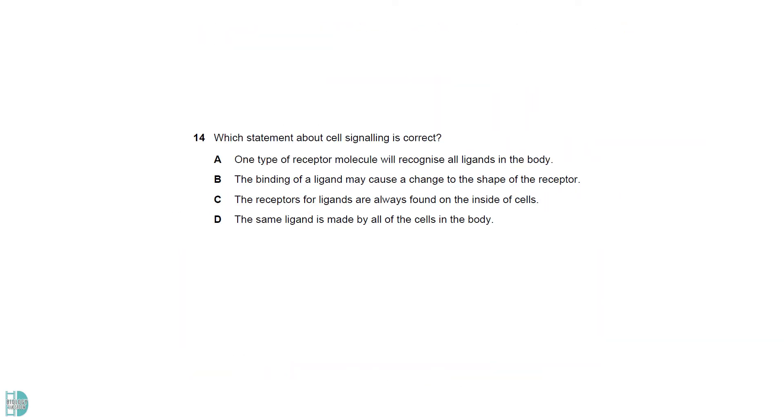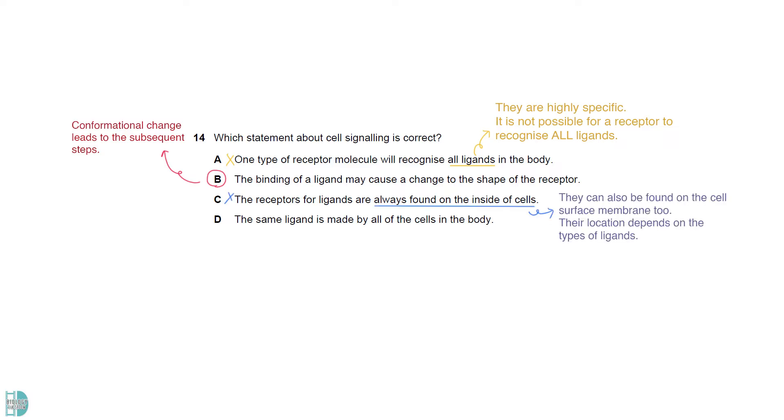A is incorrect. A receptor molecule is highly specific to its ligand. It cannot recognize all ligands in the body. B is the answer. The binding may cause a conformational change to the receptor, which leads to the subsequent steps. C is wrong because receptors can be found on the cell surface membrane too. Their location depends on the types of ligands. D is incorrect as the same ligand can only be produced by a specific signaling sending cell in our body.